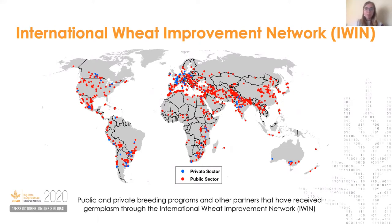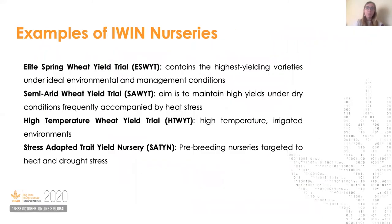This is a really remarkable dataset from a research perspective — probably one of the most extensive multi-environment trials of any crop in the public sector, opening up many opportunities to leverage the data to answer relevant research questions. The IWIN distributes a number of different types of nurseries. Perhaps the most well-known is the Elite Spring Wheat Yield Trial, or ESWYT, which contains high-yield potential spring wheat germplasm adapted to Mega Environment 1. This is one of the longest-running IWIN nurseries, first established in 1981. In addition, there are nurseries targeted at other mega environments, specific stress profiles, diseases, and different types of breeding material.